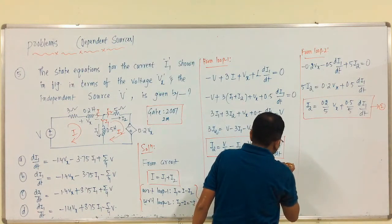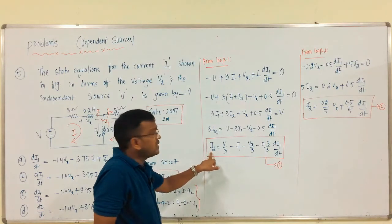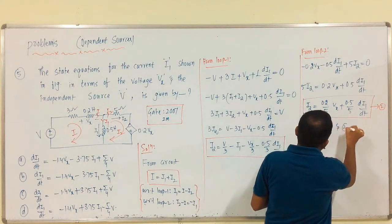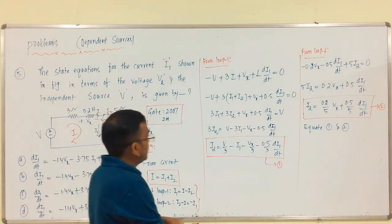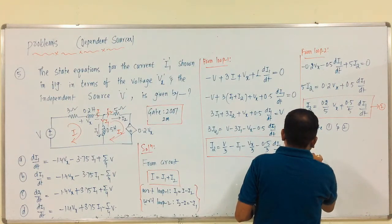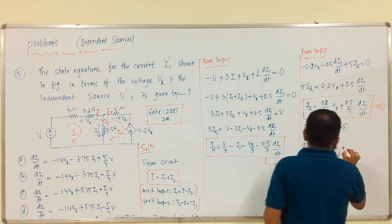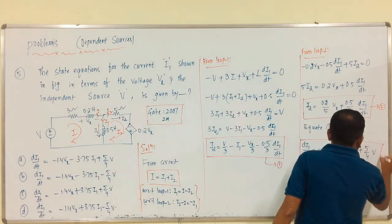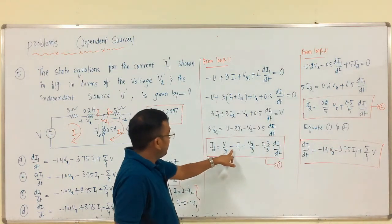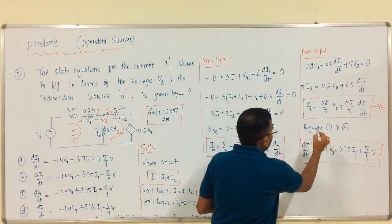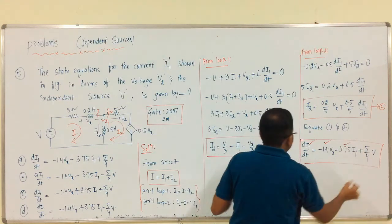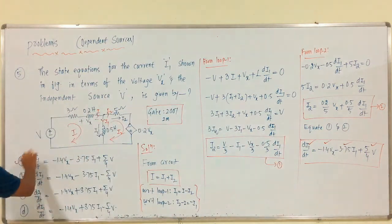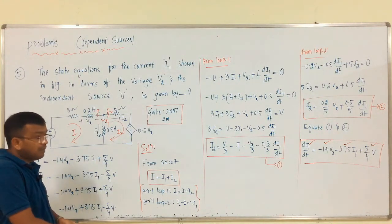Equating equations 1 and 2, since I2 is the same: V/3 minus I1 minus Vx/3 minus (0.5/3)·dI1/dt equals (0.04)·Vx plus (0.1)·dI1/dt. Solving for dI1/dt: dI1/dt equals minus 1.4·Vx minus 3.75·I1 plus (5/4)·V. This is the required state equation — only the terms Vx, I1, and V appear, matching the expected answer format.